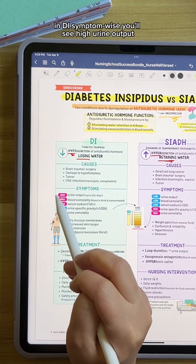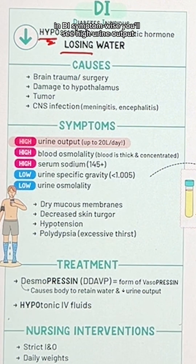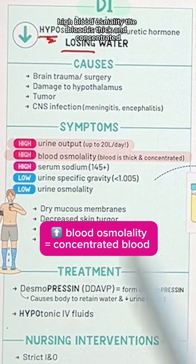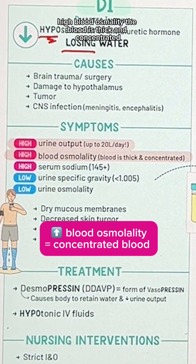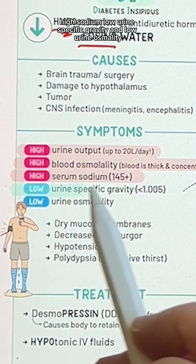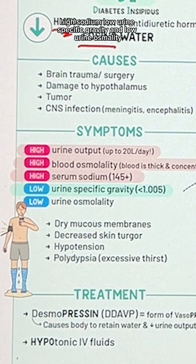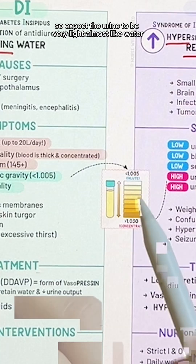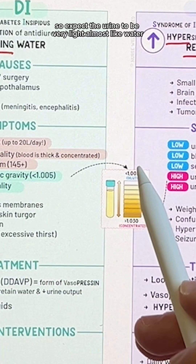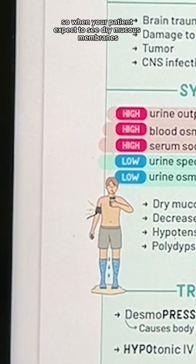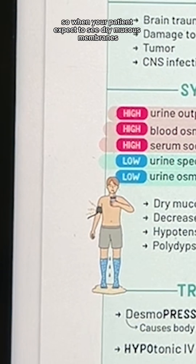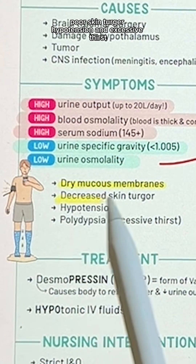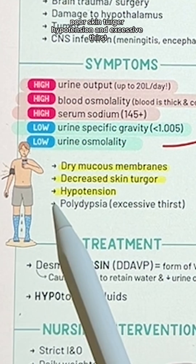In DI, symptom-wise, you'll see high urine output, high blood osmolality — think the blood is thick and concentrated — high sodium, low urine-specific gravity, and low urine osmolality. So expect the urine to be very light, almost like water. In your patient, expect to see dry mucous membranes, poor skin turgor, hypotension, and excessive thirst.